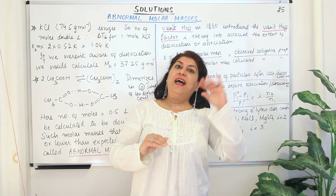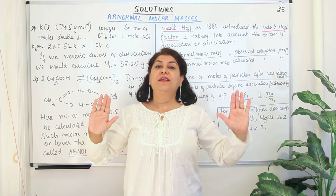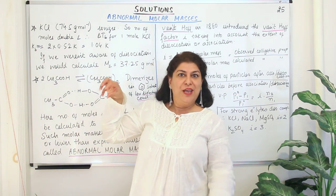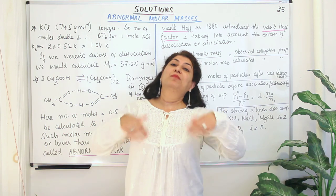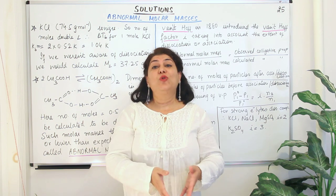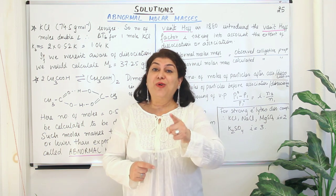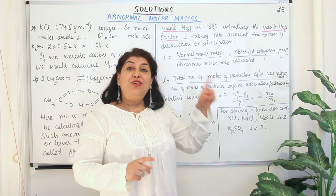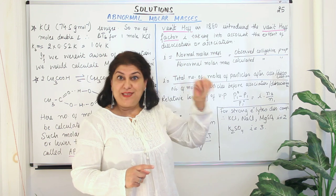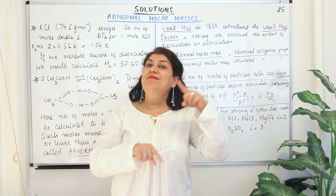When you dissolve them in a solvent which has a high dielectric constant, they would just ionize — they would fall apart. The positive ion and the negative ion will separate. As a result, the number of moles of the solute that you took — as soon as it enters water and dissociates — the number of moles becomes twice the amount. If you took one mole of KCl, as soon as it goes into solution, it will break down into K⁺ and Cl⁻, resulting in two moles. The colligative property would then be calculated on the basis of these two moles, so the molar mass calculated would be wrong.